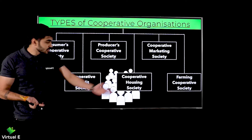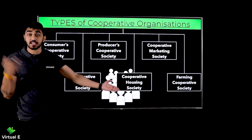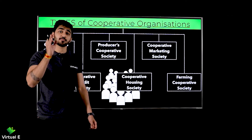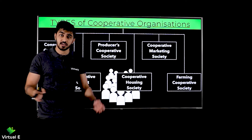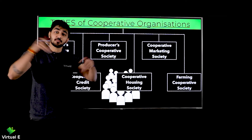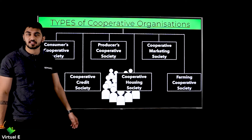So the cooperative housing society consists of people who don't have money to make their own house. Such people come together, pool their money, buy land, and construct houses on it. That is the basic function of a cooperative housing society.